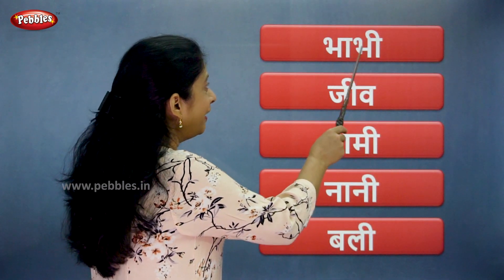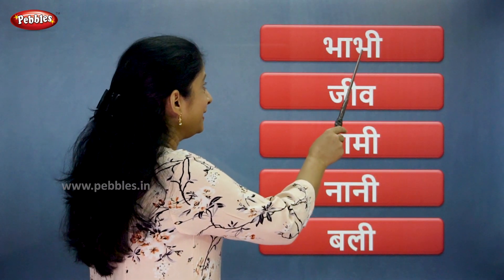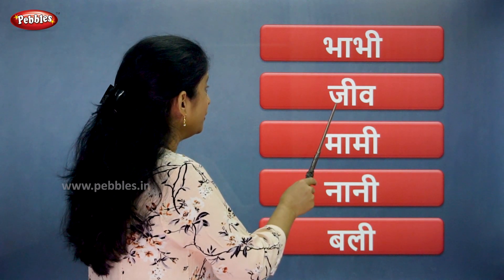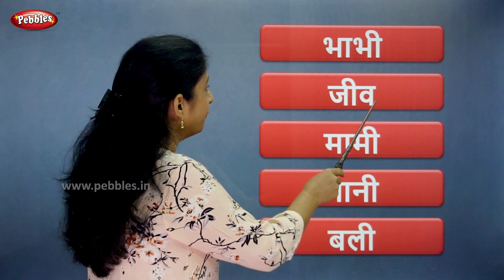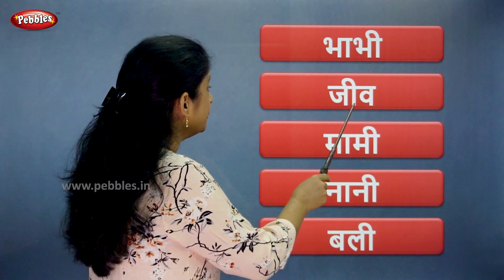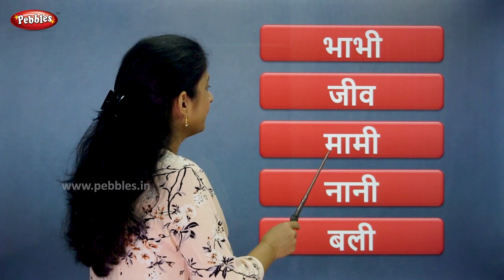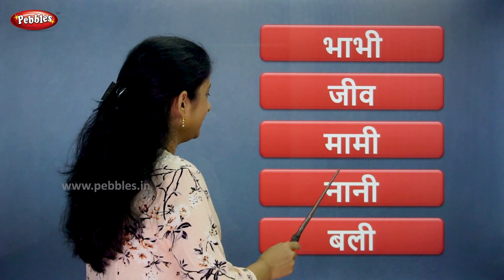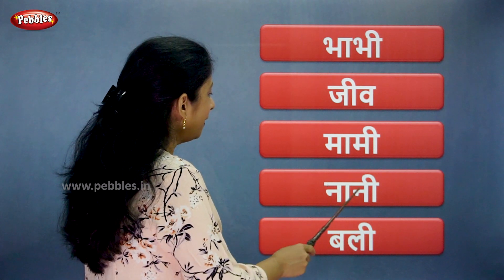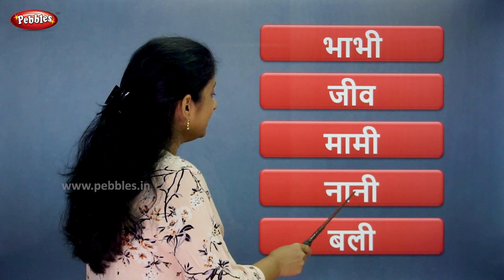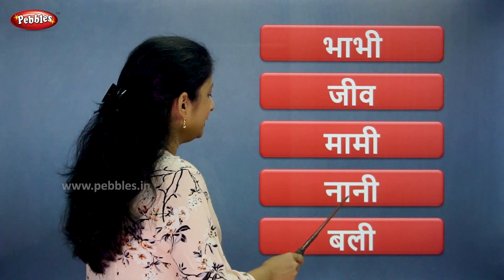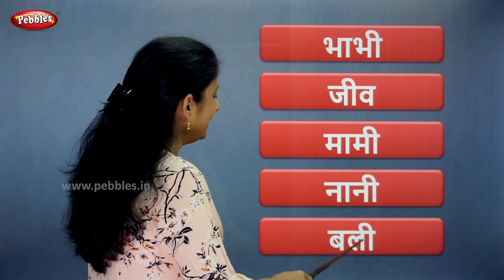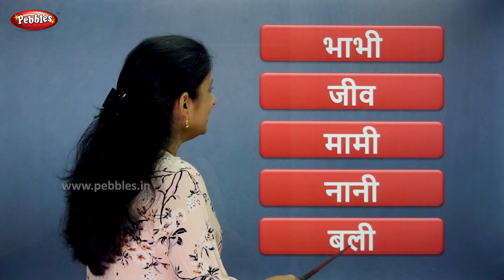भा... भी... भावी. जी... व... जीव. मा... मी... मामी. ना... नी... नानी. ब... ली... बली.